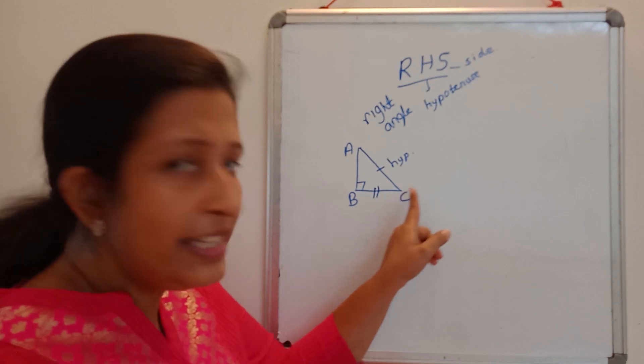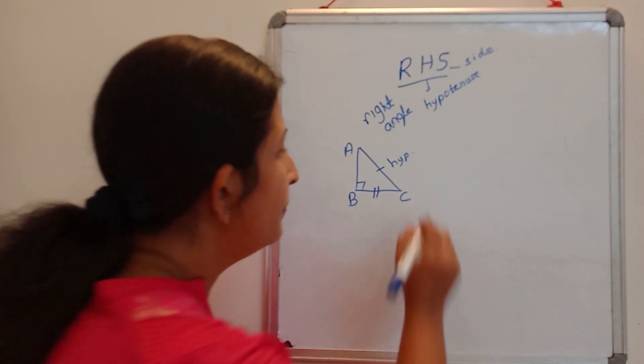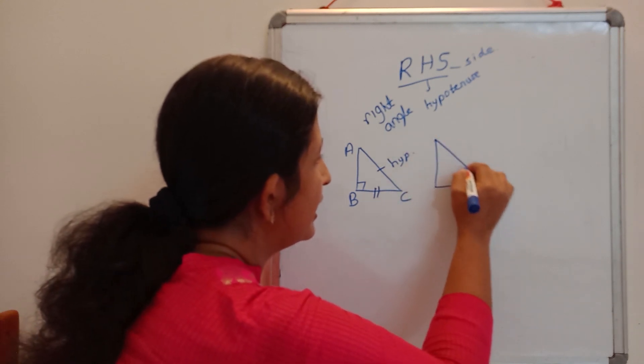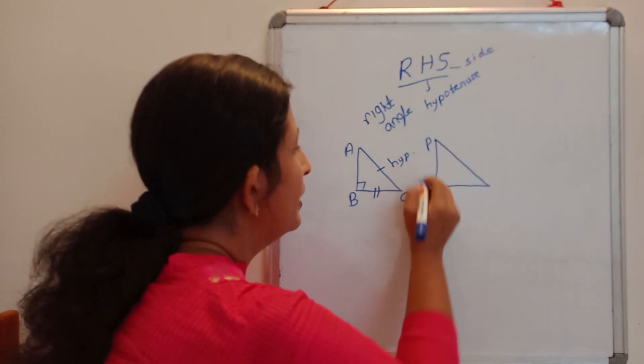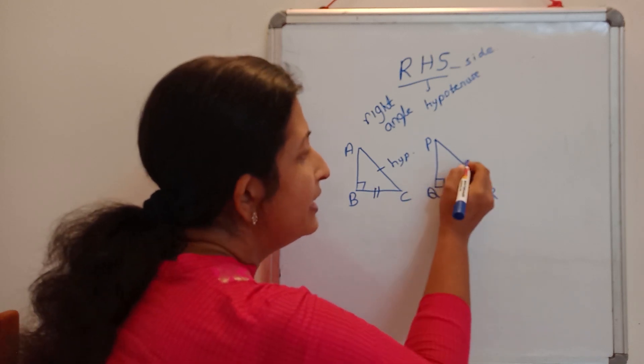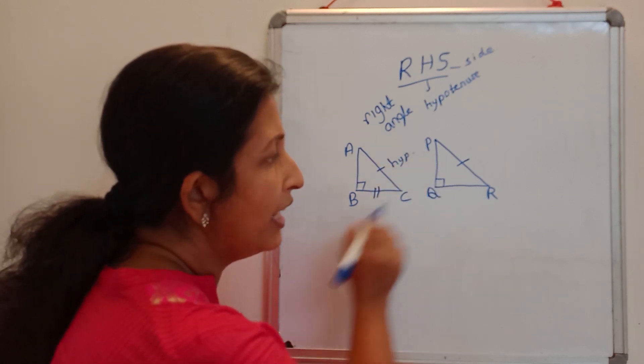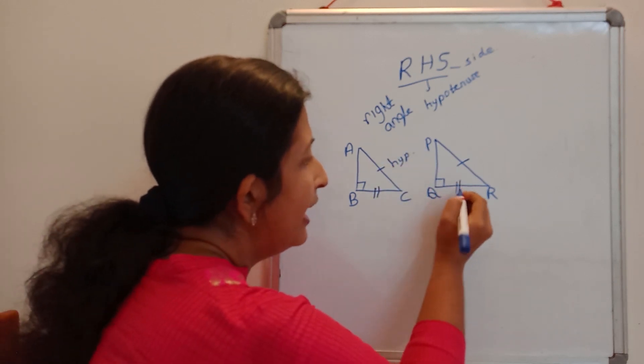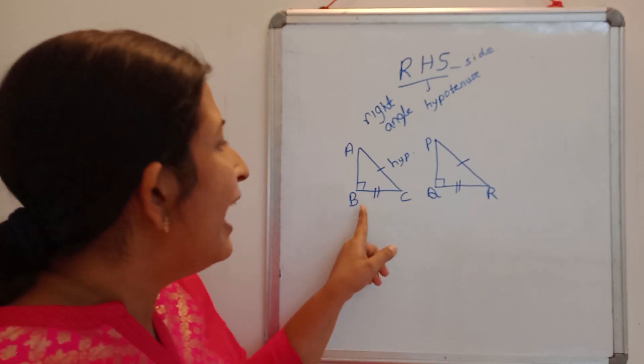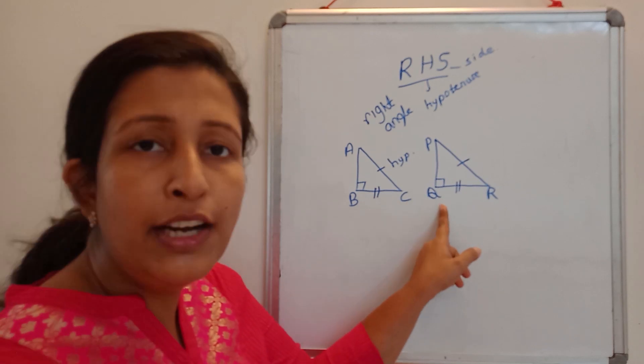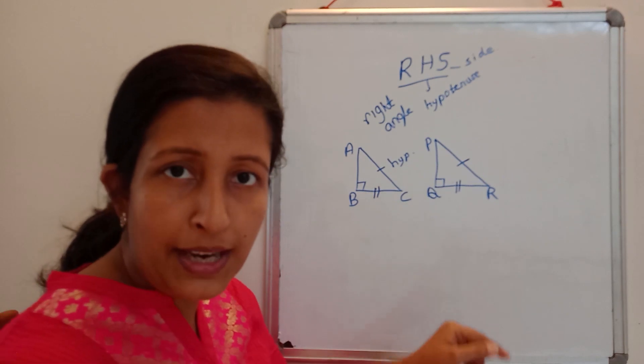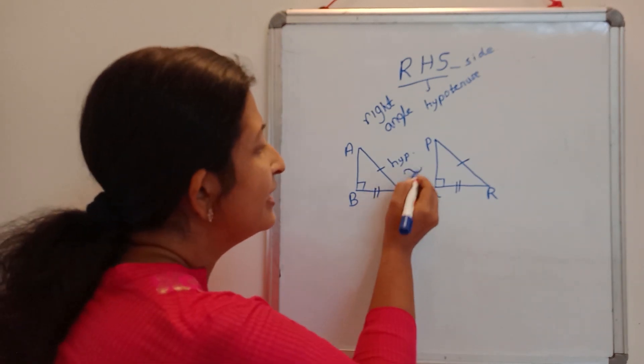These three things are equal to these three things. This is the other triangle PQR. Here Q is the right angle and this side is the hypotenuse, that is PR is the hypotenuse. And one more side QR. If BC is equal to QR and angle B and angle Q are the right angles and